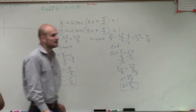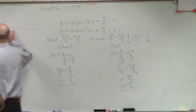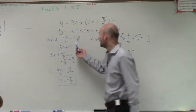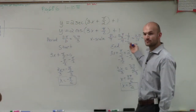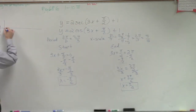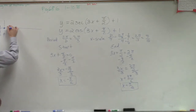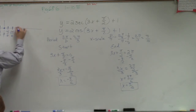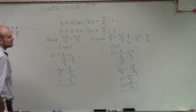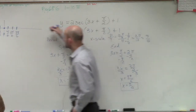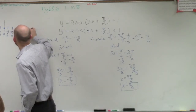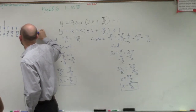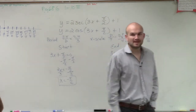The graph starts at negative π over 6, and our x scale is π over 6. So the next important point is at 0, then π over 6, then 2π over 6, then 3π over 6, and you can keep going: 4π over 6, 5π over 6, 7π over 6, 8π over 6.